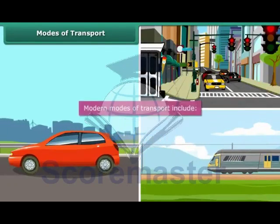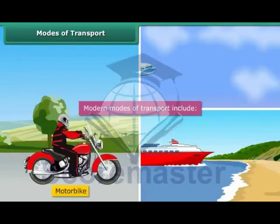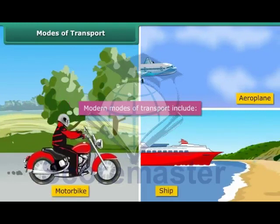As you can see, hence we now have cars, buses, roads, railways, motorbikes, aeroplanes, ships etc. to travel.